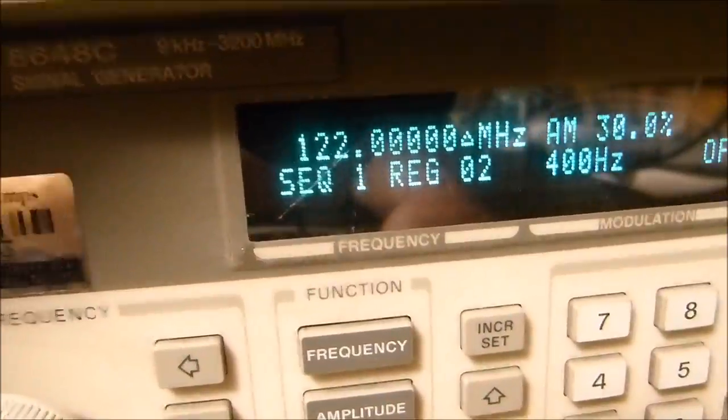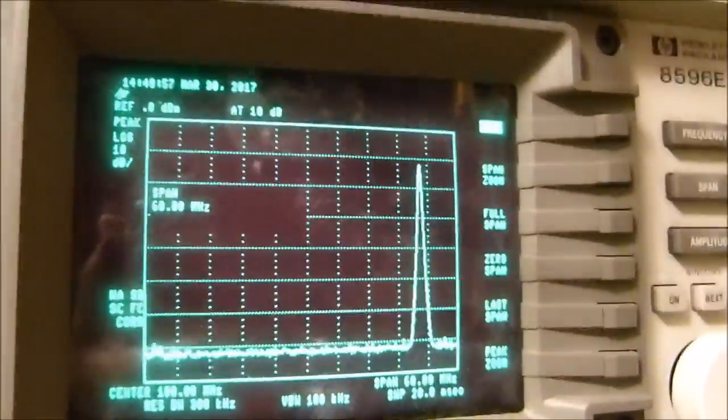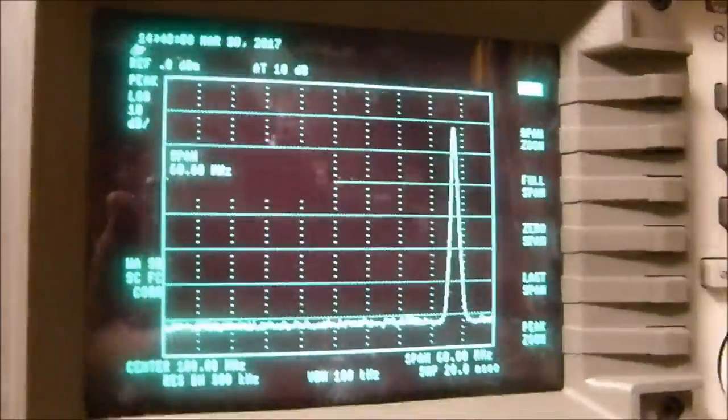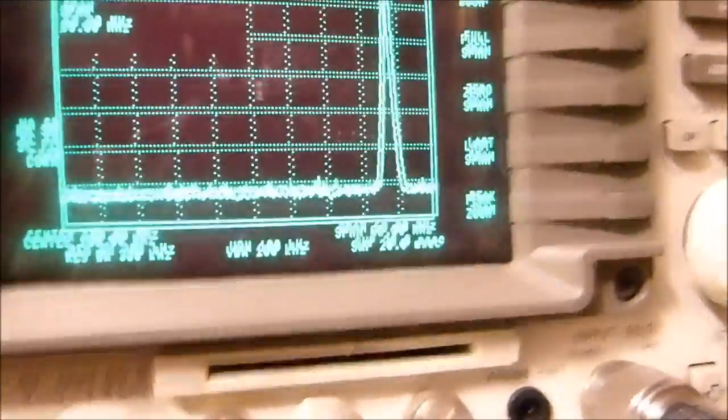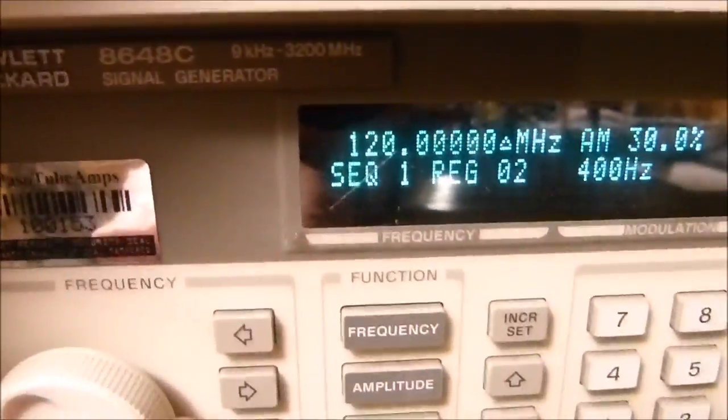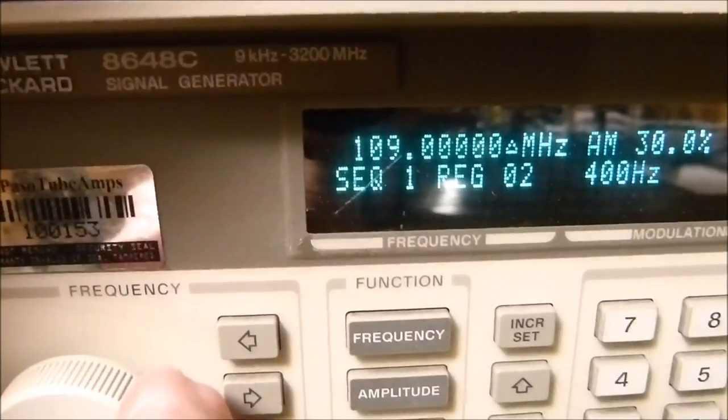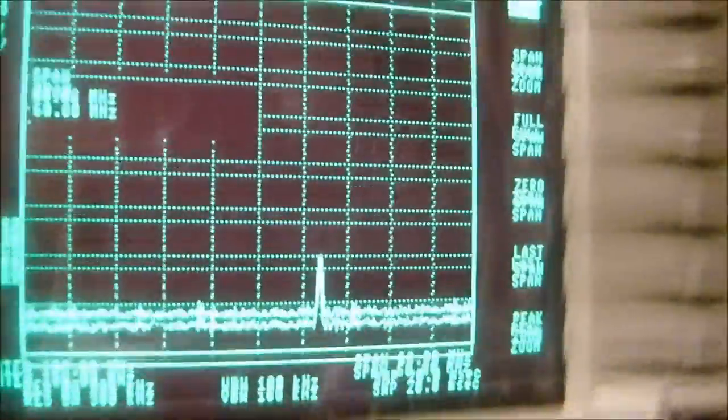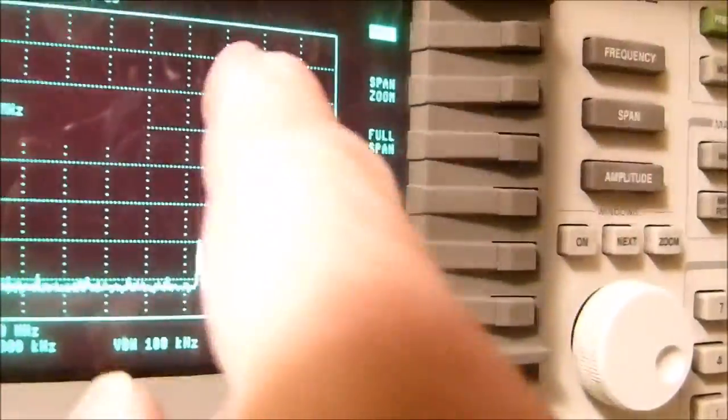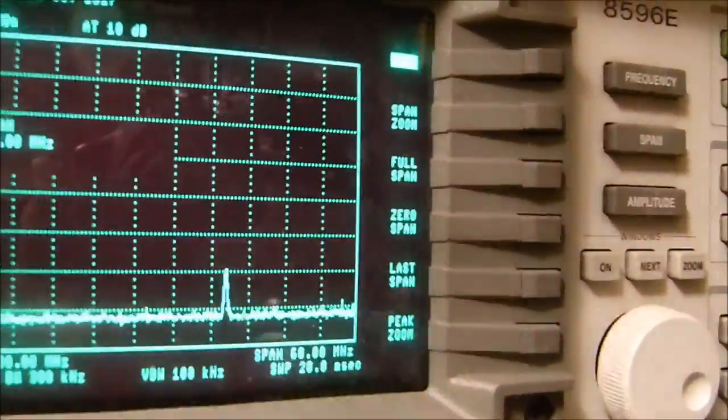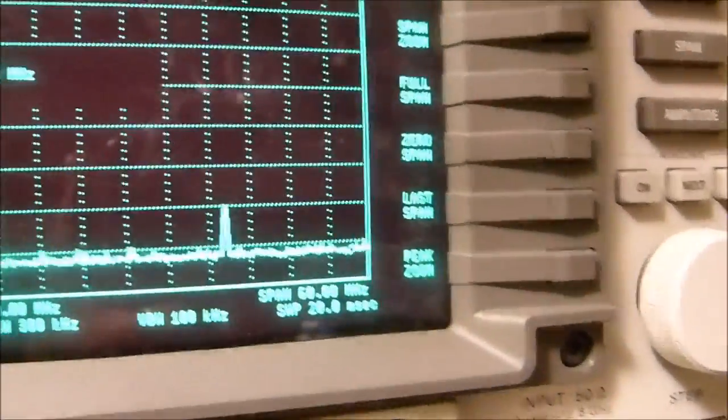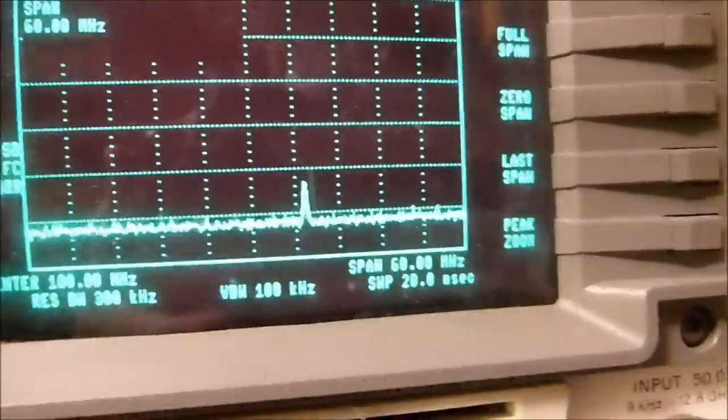So this thing's doing a beautiful job of attenuating 88 to 108 megahertz. Let's set this to 108, which is the top of the range. 108—see, it's way down here, it's down 10, 20, 30, it's down 50 dB at 108 megahertz. I'm going to dial over to 88.